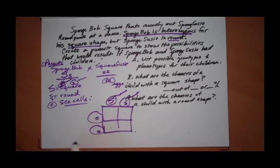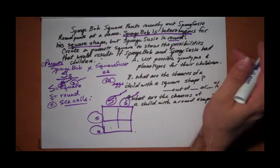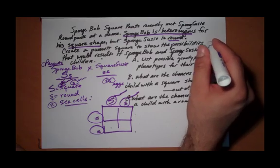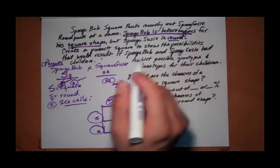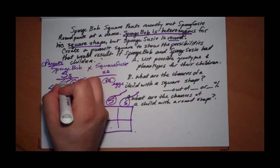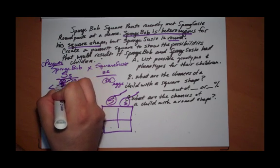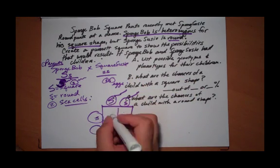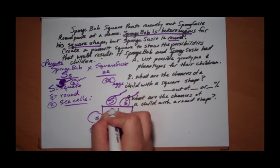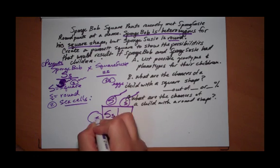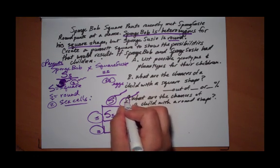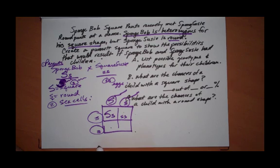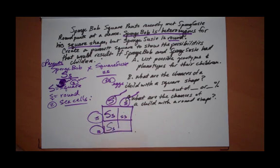Here's a good tip whenever you do your Punnett squares: make sure you exaggerate the sizes. I didn't do a good job here — these are all little s's, but the big S should be really big. So I'm going to go back and make a big S. Big S, little s — remember, down and across. And this is little s, so little s, little s. Down and across: big S, little s. Down and across: little s, little s.